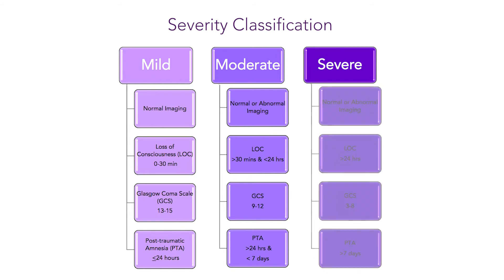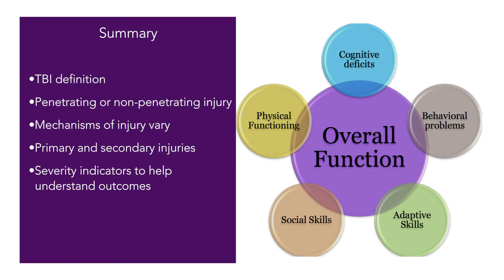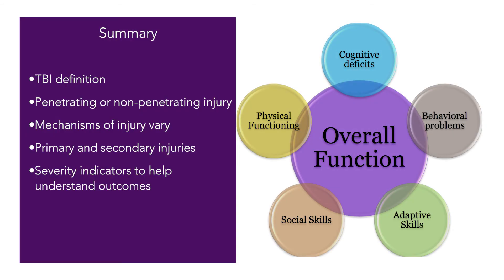Finally, classification of a severe TBI has indicators of either normal or abnormal imaging, a loss of consciousness of greater than 24 hours, GCS of between 3 and 8, and a PTA of greater than 1 week. So to summarize briefly, a TBI is defined as caused by a bump, blow, or jolt to the head, or a penetrating head injury that disrupts the normal functioning of the brain. A TBI can be considered either penetrating or non-penetrating. There are a number of mechanisms that can result in a TBI, and it is important to understand that there are both primary and secondary injuries that can occur, and TBIs can be classified as mild, moderate, or severe traumatic brain injury, depending on the severity indicators.